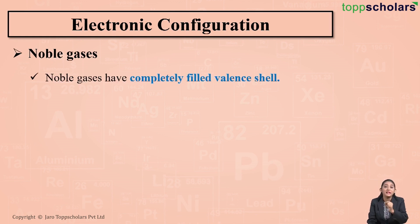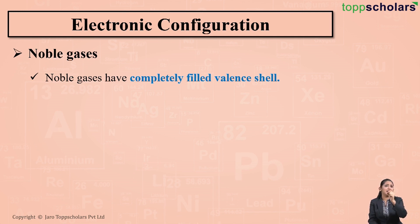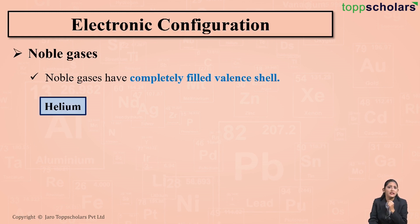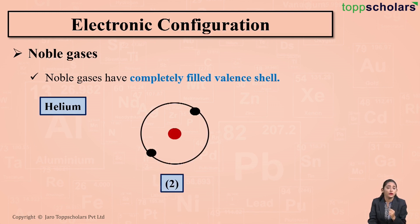What are noble gases? Noble gases have completely filled valence shells, which means that noble gases do not react easily, and so noble gases are said to be stable. Let's take an example to understand this. We have helium, which is a noble gas. The atomic number of helium is 2.